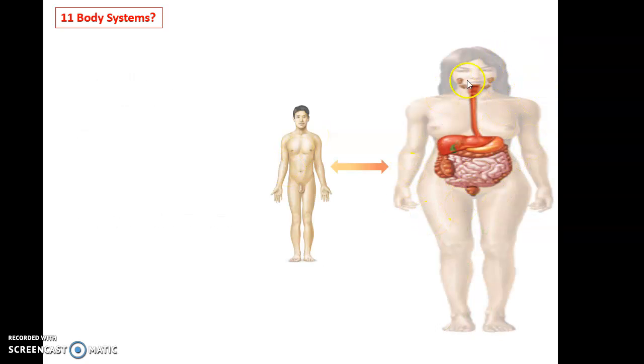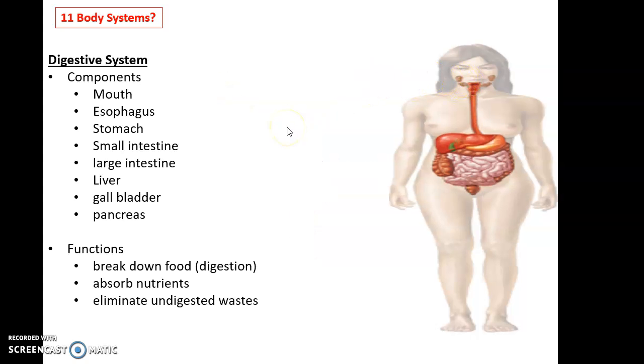And we have this system here known as the digestive system. The digestive system has many components, including the mouth and oral cavity, the esophagus, the stomach, the small intestine, the large intestine, the liver, the gallbladder, the pancreas, salivary glands, and lots of components to the digestive system.